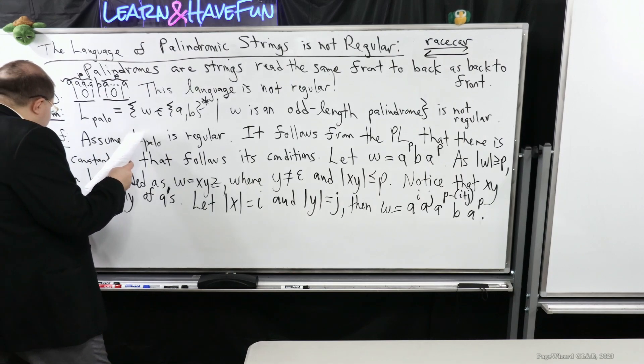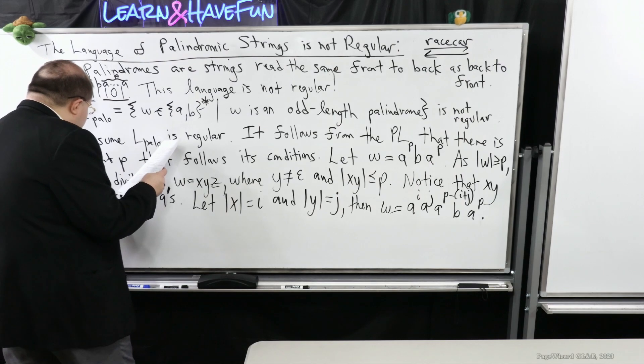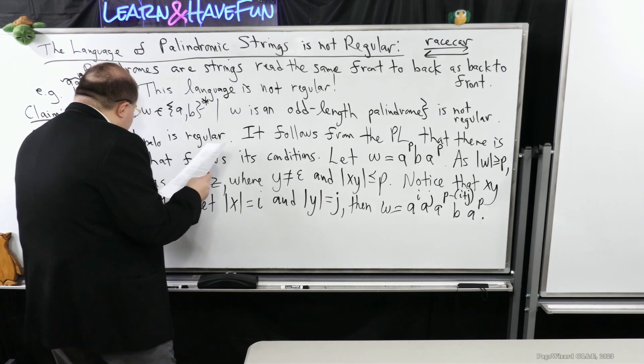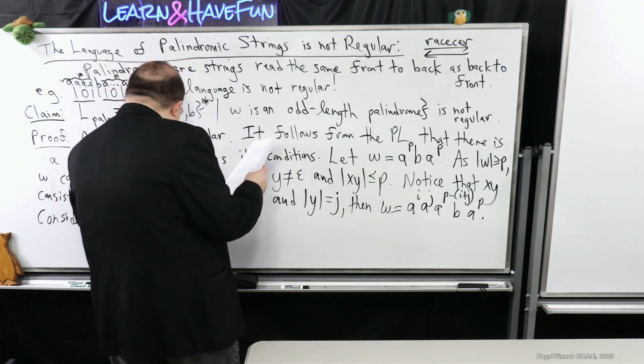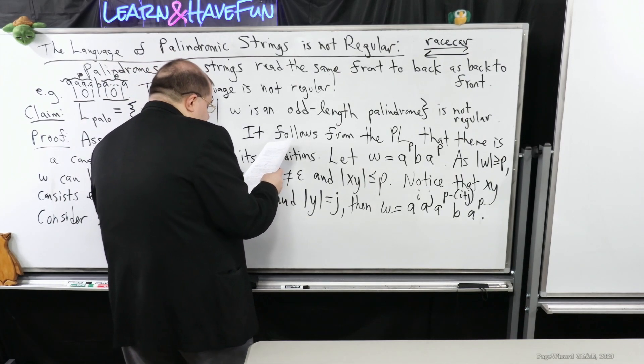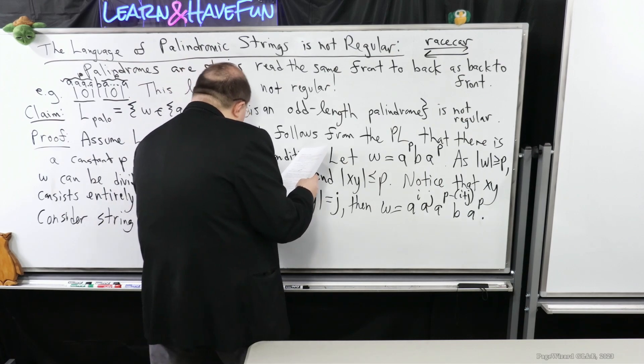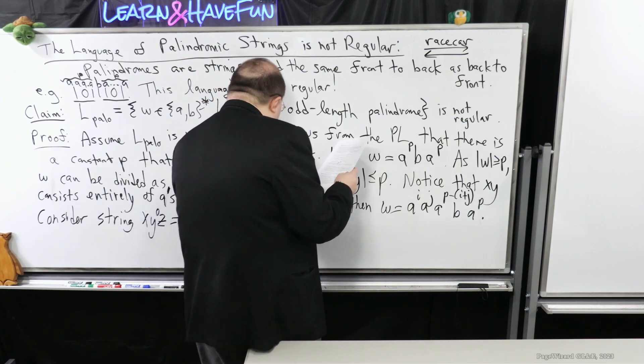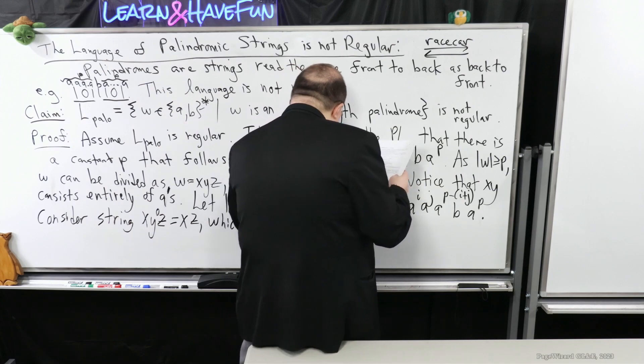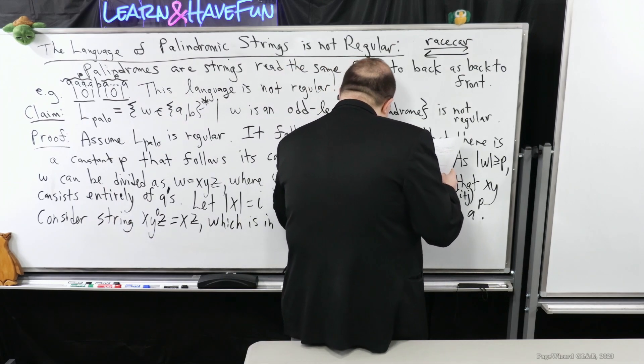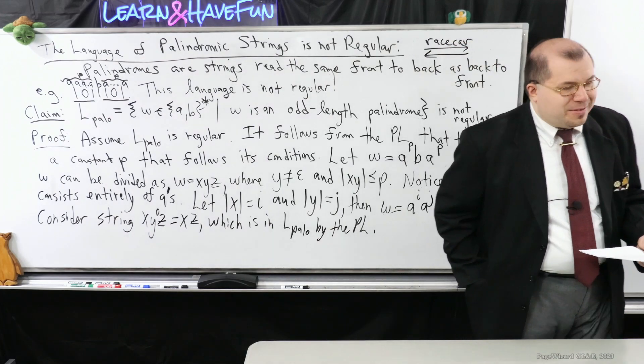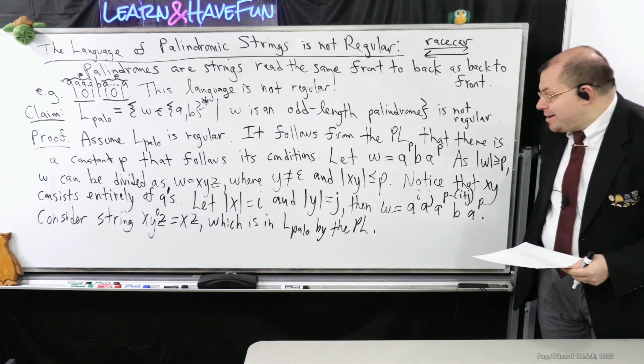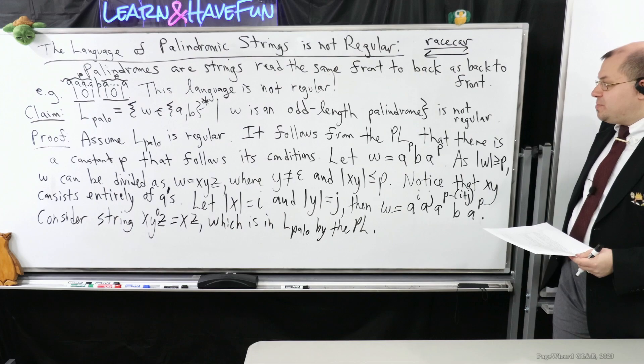So we're going to consider string X, Y to the 0, Z. So I'm going to pick k as 0, which is equal to X, Z, which is in L_palo by the pumping lemma. That's what I get out of the last property, the last thing that we get out of that split that occurs.